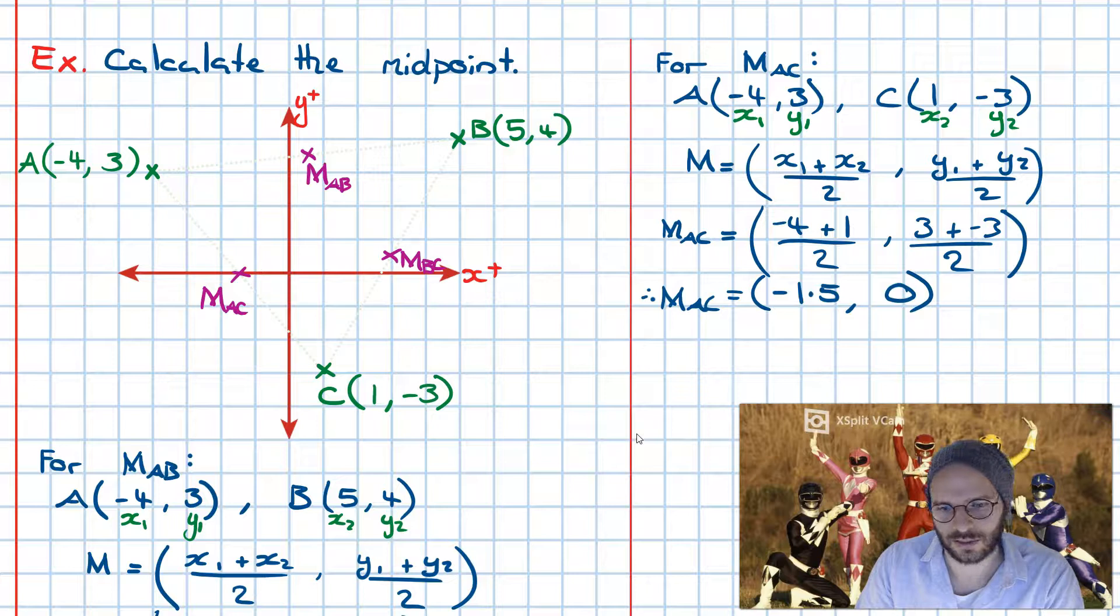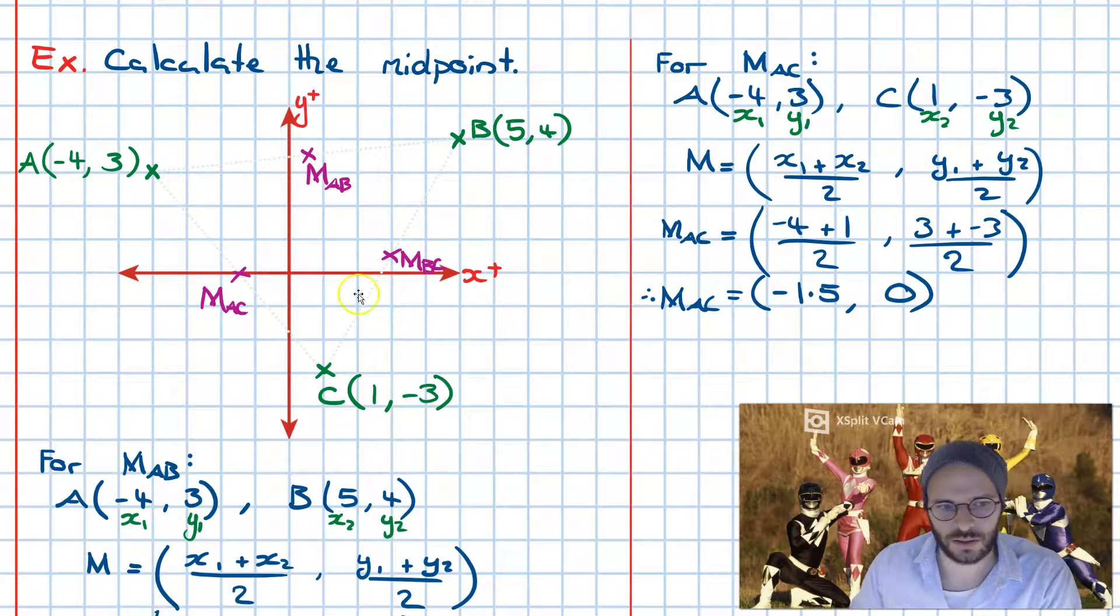Thus what we find is that the midpoint for the midpoint of line AC here is going to be located at minus 1.5 and 0. So still on the x-axis. Our diagram seems to agree with what we've calculated here. Last one.